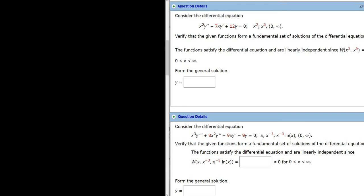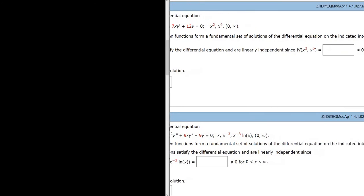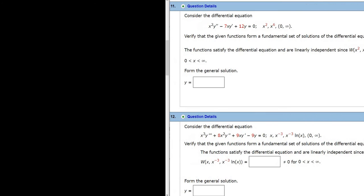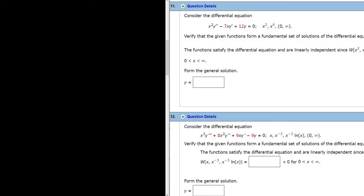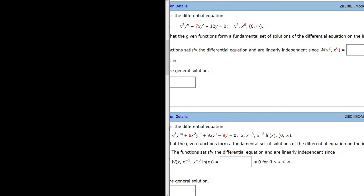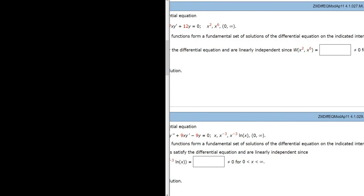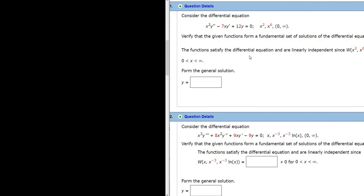And it says, verify that the given functions, so x squared and x to the sixth, form a fundamental set of solutions of the differential equation on the indicated interval. Then it tells you that the functions satisfy the differential equation and are linearly independent since, and then it has you fill in the Wronskian. And then it wants the general solution.